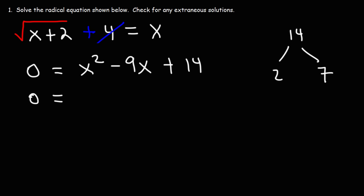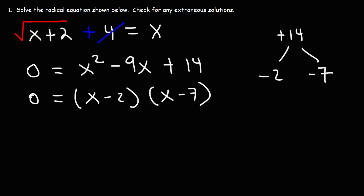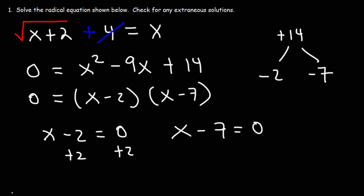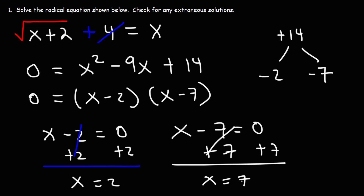2 times 7 is positive 14, but for it to add up to negative 9, we need both negative 2 and negative 7. Negative 2 plus negative 7 equals negative 9, but they still multiply to positive 14. So we can write this as x minus 2 times x minus 7. Using the zero product property, we set each factor equal to zero. Setting x minus 2 equal to zero gives x equals 2, and setting x minus 7 equal to zero gives x equals 7.